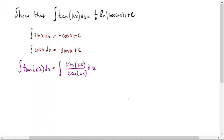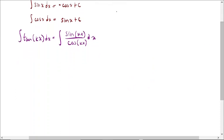And this is just a straightforward u-substitution problem. So we're going to let u equal the denominator, u equals cosine(kx).